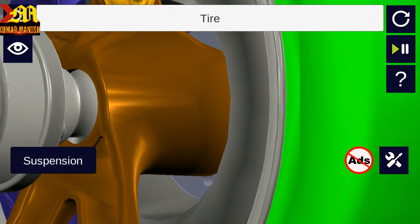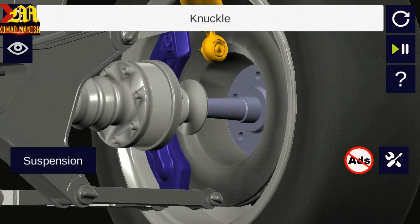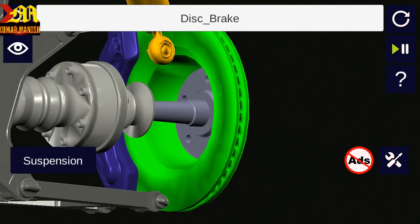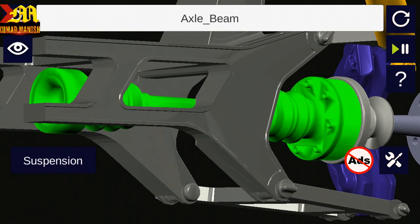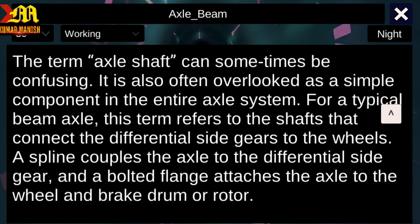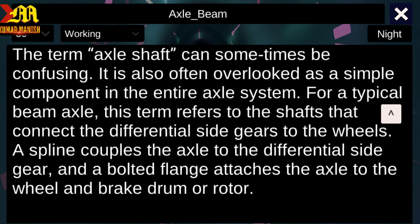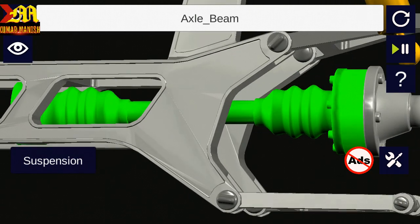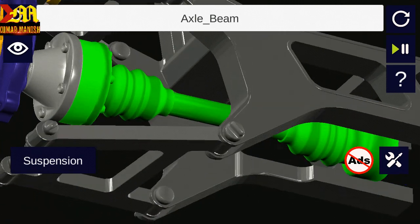Next we will discuss about the axle beam. The term axle shaft can sometimes be confusing and is often overlooked as a simple component in the entire axle system. For a typical beam axle, this term refers to the shaft that connects the differential side gears to the wheels. A bolted flange attaches the axle to the wheel and brake drum or rotor. This is the axle beam.